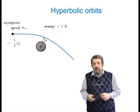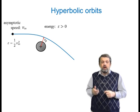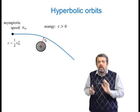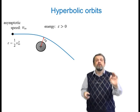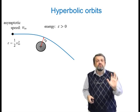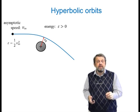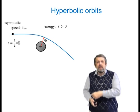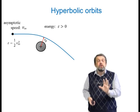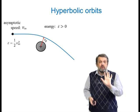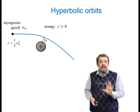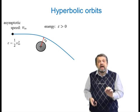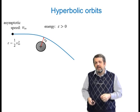Finally, there are hyperbolic orbits. They all have energy greater than zero, which means that at a very great distance — infinitely far away from the planet — you have some speed called the asymptotic speed. The specific kinetic energy far away equals the total energy, so ε = ½ v∞².